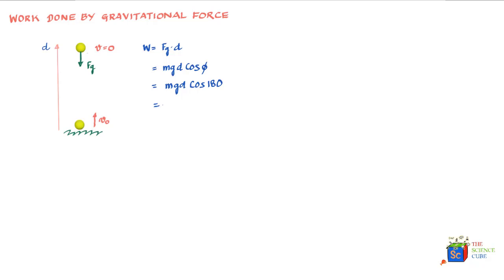We have mathematically proved that the work done by gravity is negative as the ball moves up. The force of gravity reduces the velocity and kinetic energy of the ball, meaning it is transferring energy out of the ball — hence negative work is done.